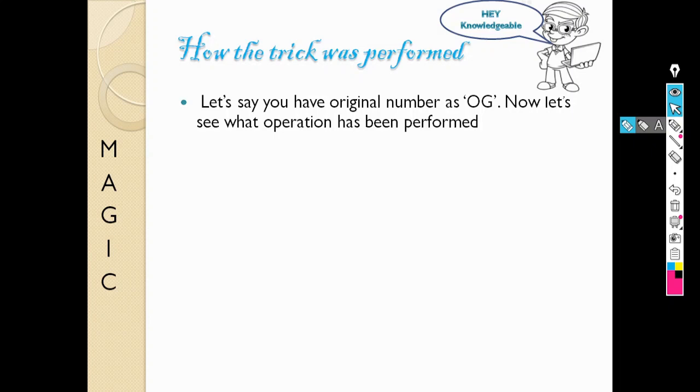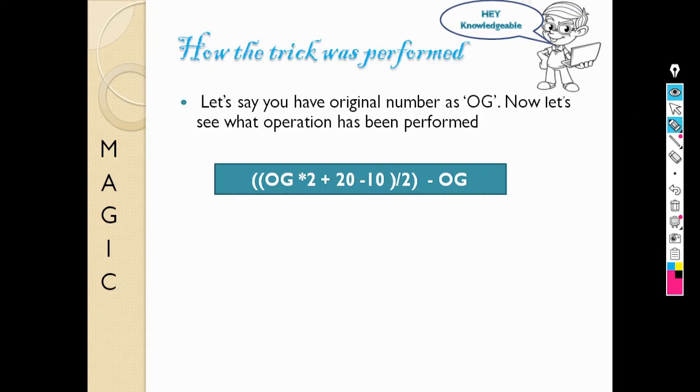I had given you certain instructions and you had done the operations according to that. I will try to put what operations we had done. I had told you to think of a number, that is OG, and then I told you to multiply it with 2.